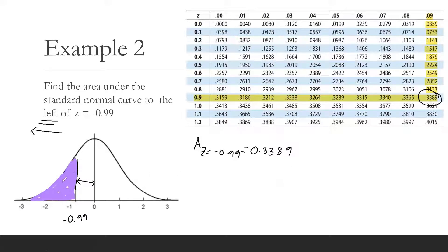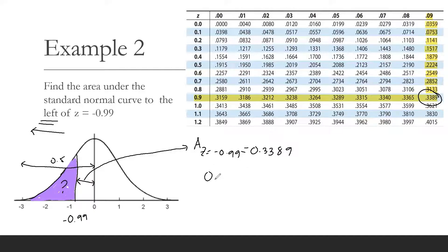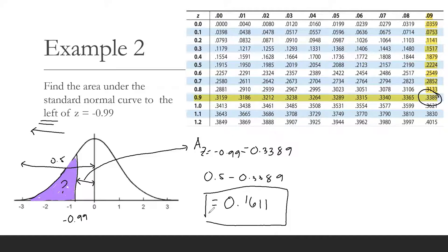So 0.3389 is the area from 0 going to negative 0.99. We know that the area to the left of the mean is 0.5. So if this area is 0.3389 and from 0 to the left is 0.5, we need to subtract: 0.5 minus 0.3389 is equal to 0.1611. So the area to the left of z equals negative 0.99 is 0.1611.